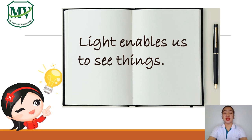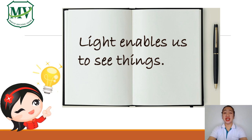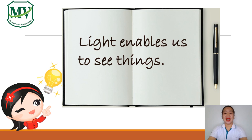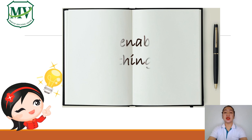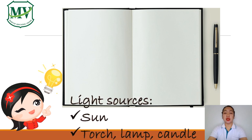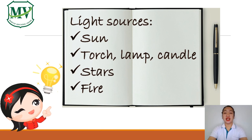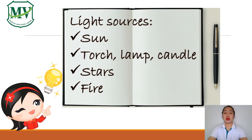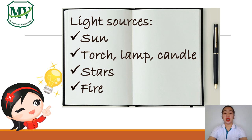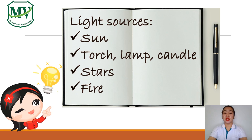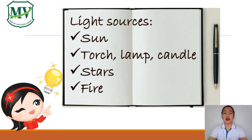If there is no light, do you think we can see anything? Definitely we couldn't. So light is not only produced by our sun. It is also produced by other different light sources such as torch, lamp, candle, stars, or even fire.